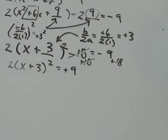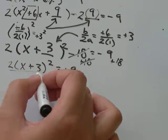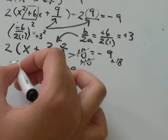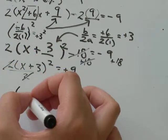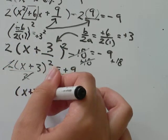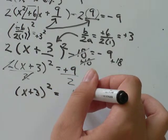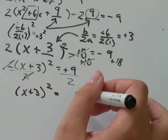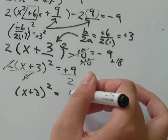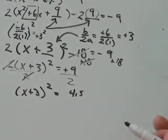So now all I'm going to do is divide the 2 out so that all I'm left with on the left-hand side is (x + 3)². And that equals 9 over 2. You could convert that to a decimal if you want. It would be 4.5.